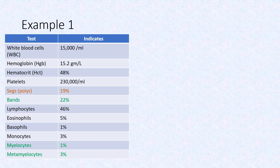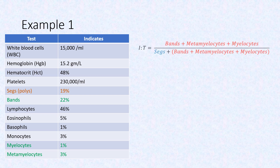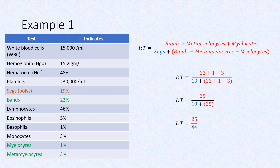Calculate the IT ratio for example 1. Recall the formula: the number of immature neutrophils divided by the total number of neutrophils. From the CBC, we need the mature neutrophils (SEGS) and the immature neutrophils, which are the bands, myelocytes, and metamyelocytes. The total percentage of immature neutrophils is 25 and the total number of neutrophils is 44. Dividing these gives an IT ratio of 0.56.